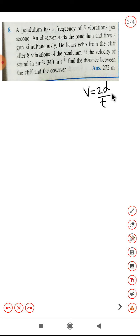Basically in case of echo we use this equation. Now here the velocity is given. Let me read this numerical first of all. A pendulum has frequency of five vibration per second. An observer starts the pendulum and fires a gun simultaneously. He hears echo from the cliff after eight vibrations. So time taken for the echo to be heard is eight vibrations. We need to find out how much time that takes and put it in this formula. Velocity is already given as you can see here. We need to calculate the distance.